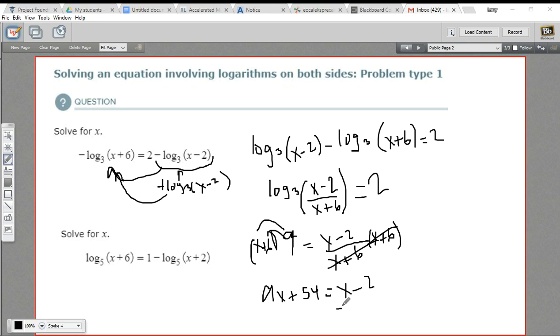And to finish up the algebra to solve this, we're going to subtract x from both sides. We're also going to subtract 54 from both sides. I'm going to do both those steps at once. And we get 8x = -56. And divide by 8, we get x = -7.